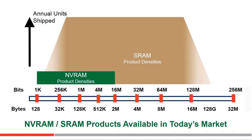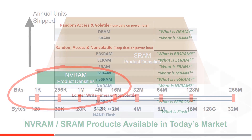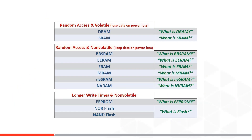But today, NVRAMs only make commercial and financial sense where their value to design engineers like you — versus their higher technology cost — allows them to exist. That is at relatively small densities, from 1k bit to 16 megabit, which is much smaller than the SRAM and DRAM offerings of today.